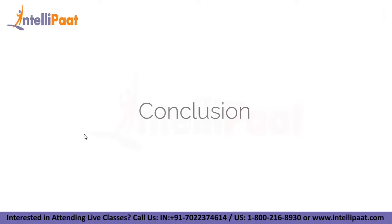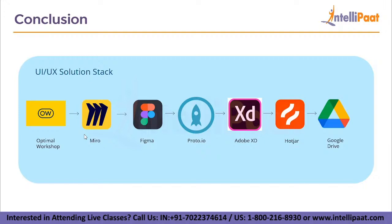Now let us talk about the conclusion. Having seen all the tools used in various stages of the UI UX design process, the solution stack looks like this: we start with Optimal Workshop for UX research, then Miro for ideation, Figma for wireframing, Proto.io for prototyping, Adobe XD for UI design, Hotjar for user and usability testing, and finally Google Drive for UX documentation. You can use alternatives as you wish for any of the stages, but this is what the basic layout looks like.